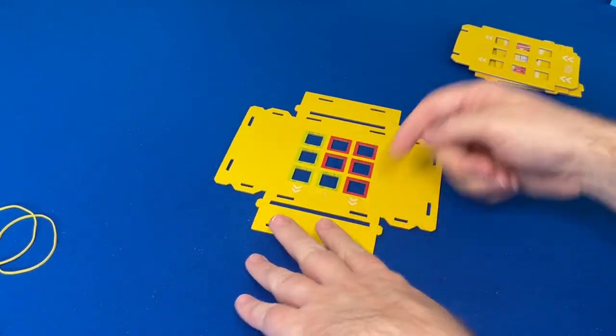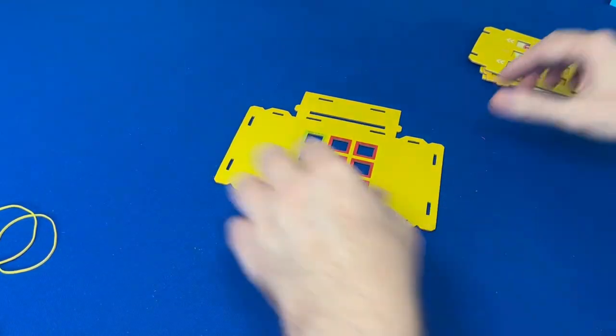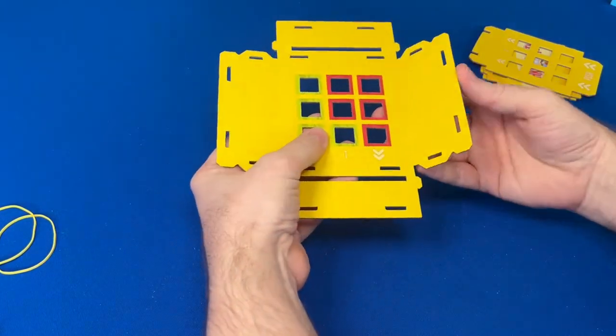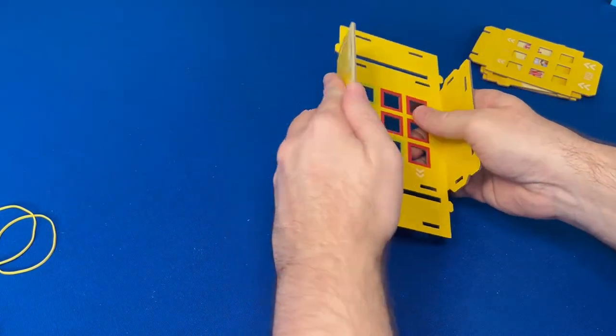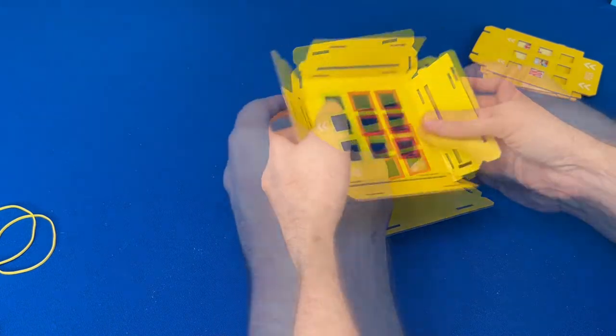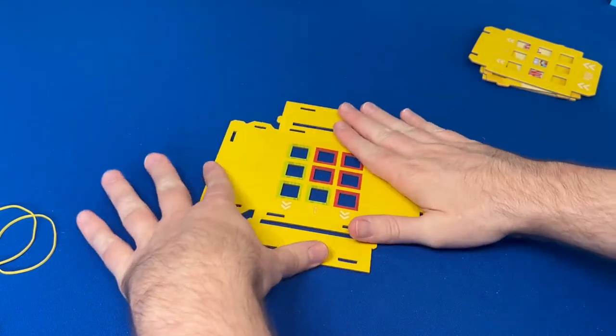To start, place the large base piece, numbered one, on the table and face the arrows to your left. Next, fold the four sides up at the hinged cuts carefully to pre-bend them. Lay the base back on the table and flatten it out a little bit.